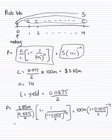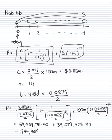And if we put that into our calculator, we get 54,909,711 dollars and 40 cents, plus 39,679,453.97. So, that equals 94,589,165.37.